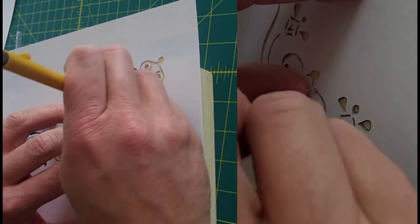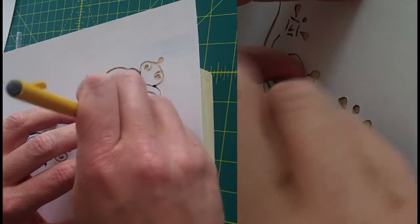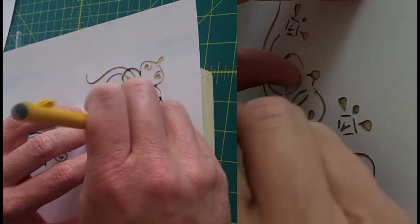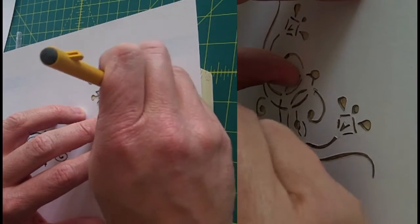Here transferring the pattern across just using a light carbon pencil. Place it on, draw it, take it off.